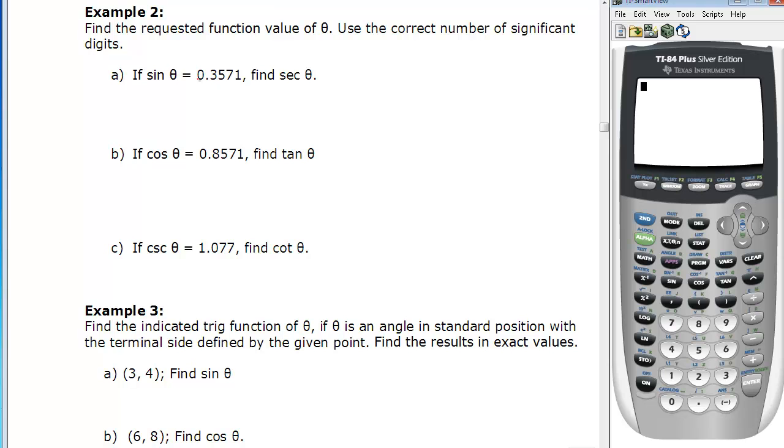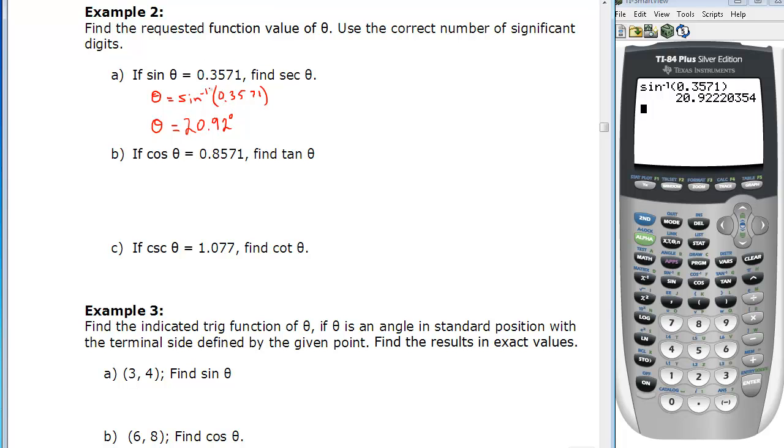So given the sine of an angle is this, we can find the angle by taking the inverse sine of the ratio we're given, 0.3571. An inverse sine is second function or shift sine on most calculators. So if we go over here, second function, sine inverse, 0.3571. And hit enter, we find that we get 20.92 degrees, rounded to four digits, since our ratio is given in four digits.